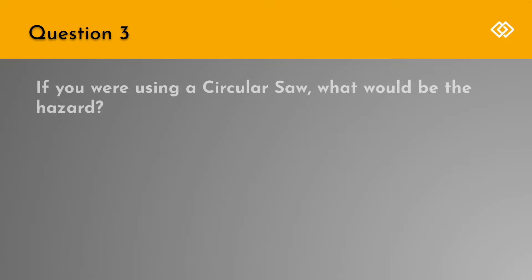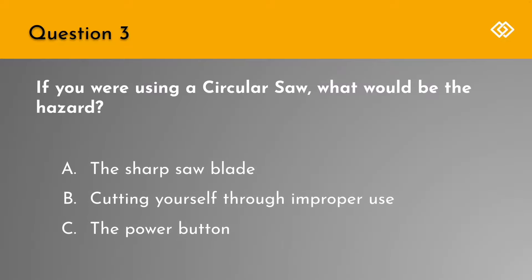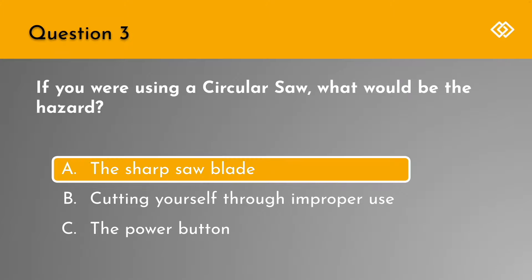Question 3. If you were using a circular saw, what would be the hazard? A. The sharp saw blade. B. Cutting yourself through improper use. Or C. The power button. The correct answer is A. The sharp saw blade.